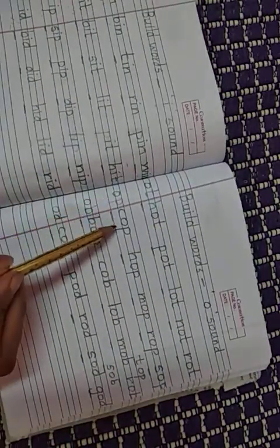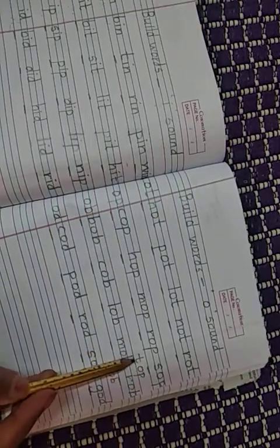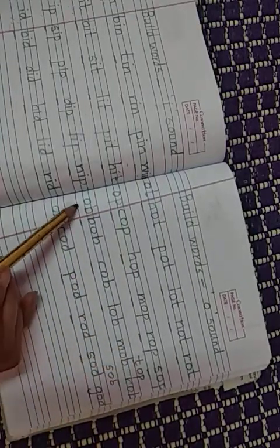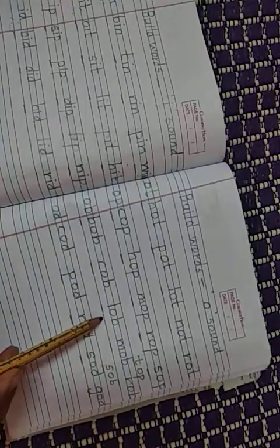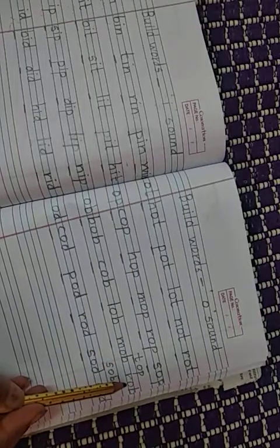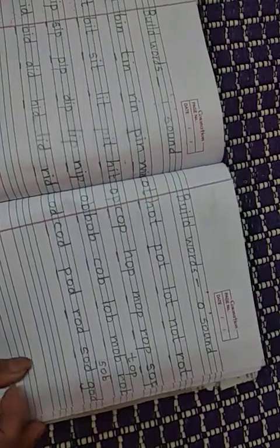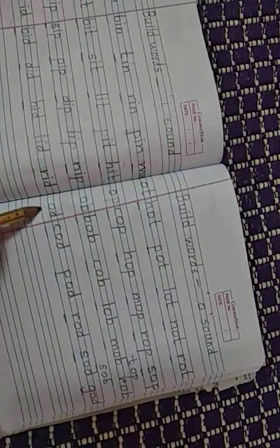Similarly, for OP words, we have seen cop, hop, mop, rop, sop, and top. OB words: bob, cob, lob, mob, then rob, and sob.